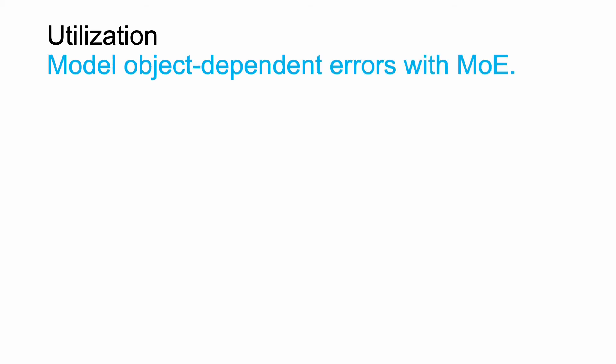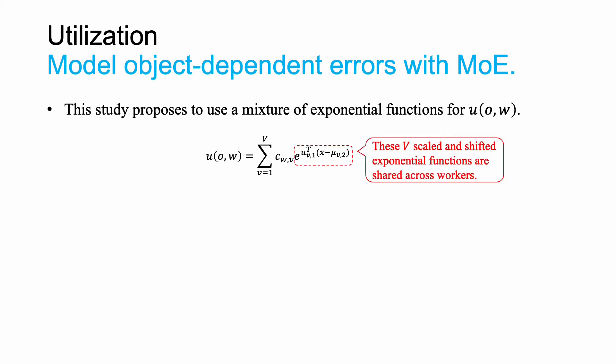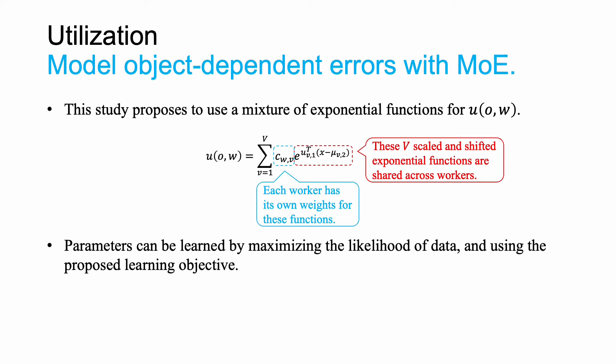To handle object-dependent error, we propose to use a mixture model for the utility function. This is a mixture of exponential functions with v components shared by all annotators — they are scaled and shifted exponential functions. Each of these functions can be considered as a ranking function for objects that is sensitive to part of the objects and not sensitive to the rest. Each worker will have its own weights for these functions, so each worker can have different sensitivity for objects. The parameters to be learned are the ranking functions, mixture weights, and embedding vectors for objects. They can be learned by maximizing the log likelihood of answers to the existing query, in combination with our proposed learning objective using the answers to the new query.